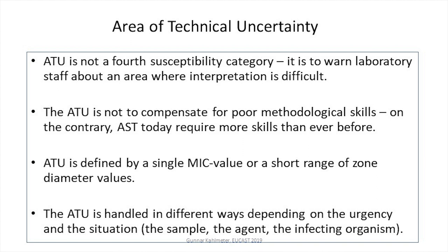The ATU is not a fourth susceptibility testing category — we do not report to clinicians S, I, R, or ATU. The ATU is a warning, an internal warning in the laboratory that this particular result has ended up in an area where interpretation may not be possible to guarantee. Also importantly, ATU is not to compensate for poor methodological skills — it will not take up slack in the method. AST today requires many more skills than it used to in the old days. The ATU is defined by a single MIC value or a short range of zone diameter values, typically one to three millimetres, and will be handled differently depending on the situation, the urgency, the sample, the agent, and the overall susceptibility pattern.